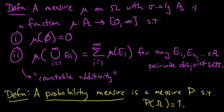We just defined the all-important concepts of measure and probability measure. And let me note here that the axioms, these conditions, in the case of a probability measure, these are sometimes referred to as Kolmogorov's axioms.